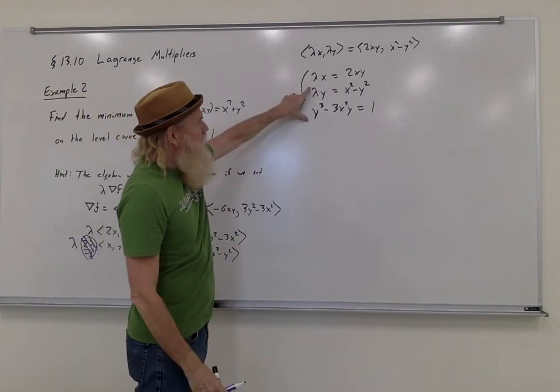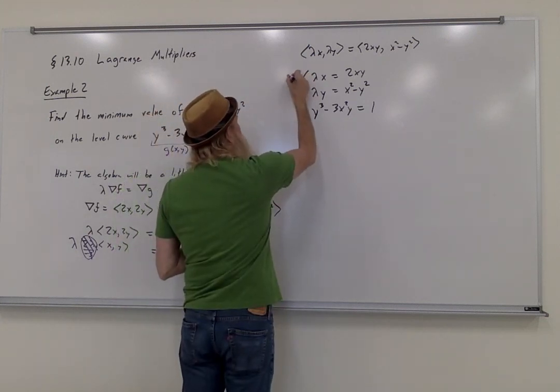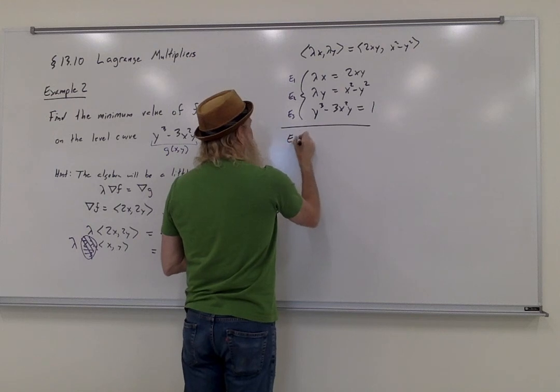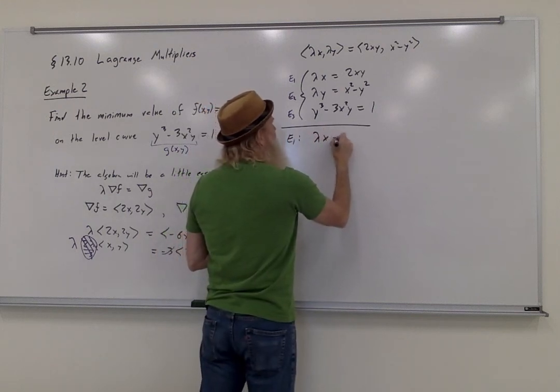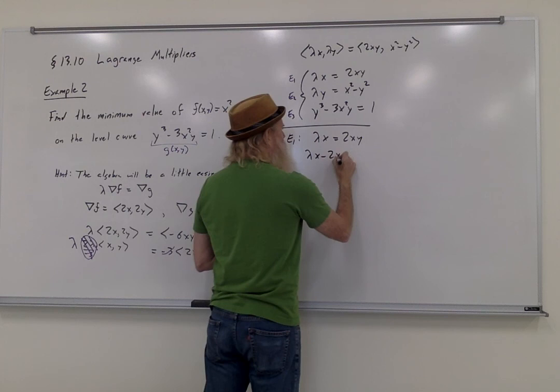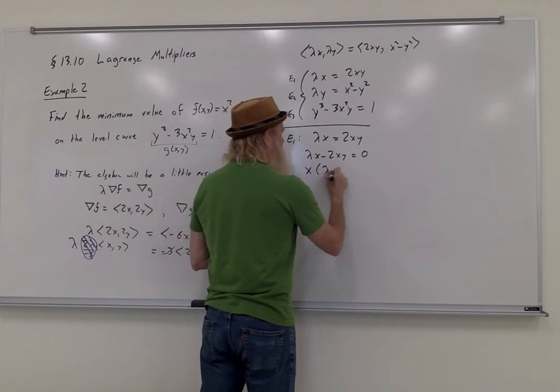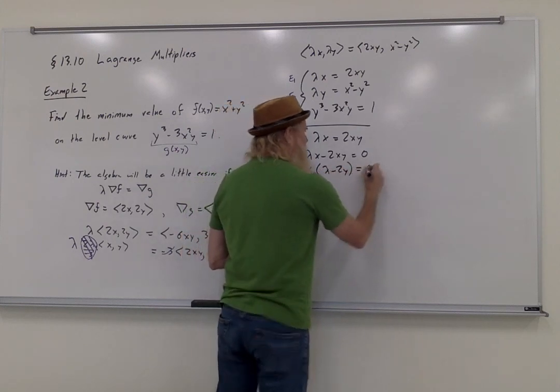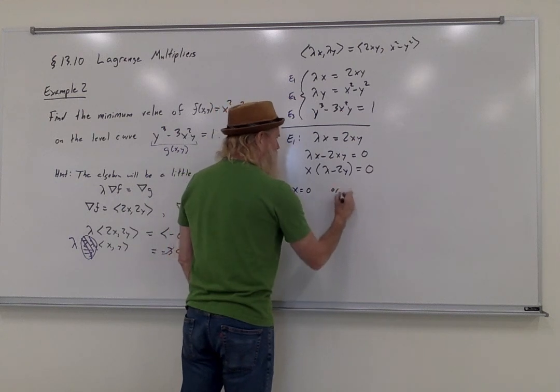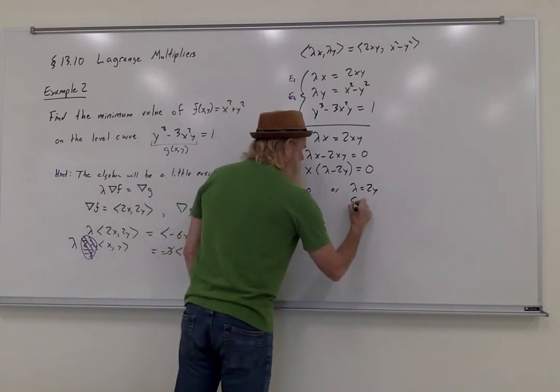Now, both of these equations are fairly complicated, but notice that first one looks like something we can work with. So let's name these equation 1, equation 2, and equation 3. Let's play with equation 1 for just a minute. If lambda x equals 2xy, then by subtracting, lambda x minus 2xy equals 0, or by factoring, I get that x times lambda minus 2y is 0. So either x equals 0 or lambda equals 2y. Let's call these cases 1 and 2.